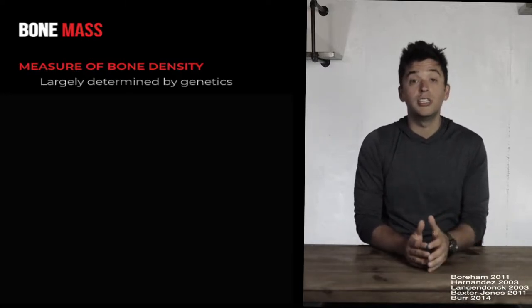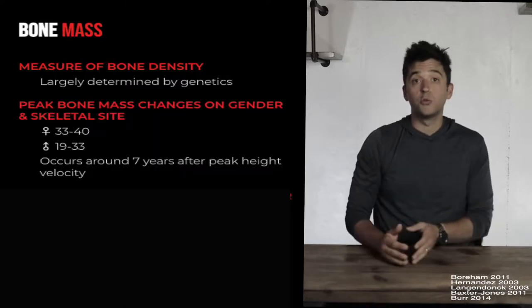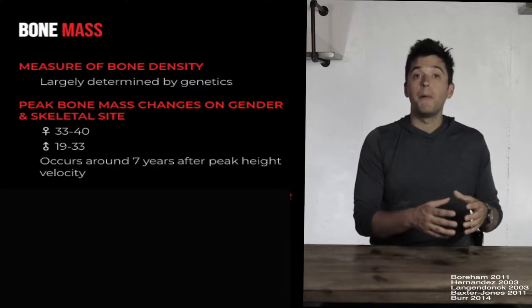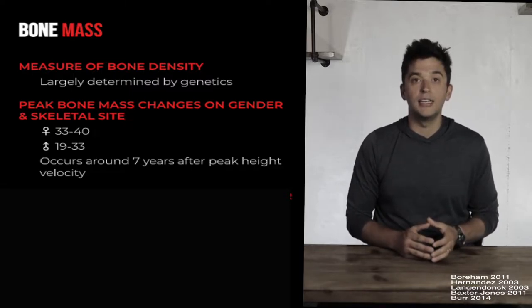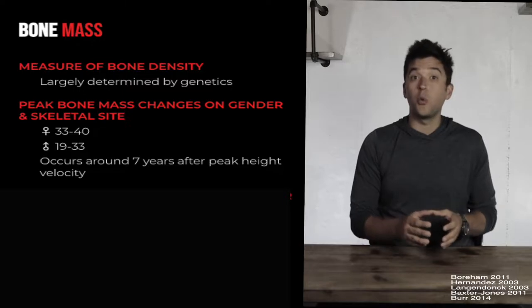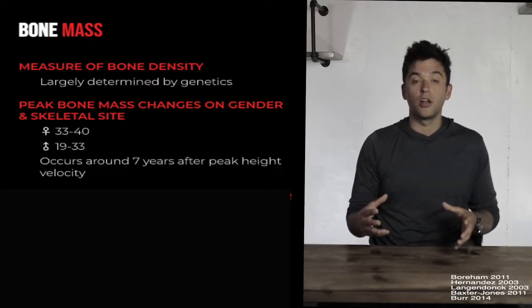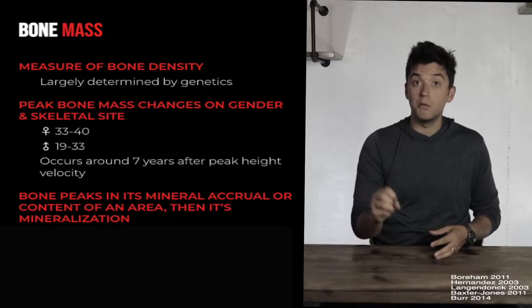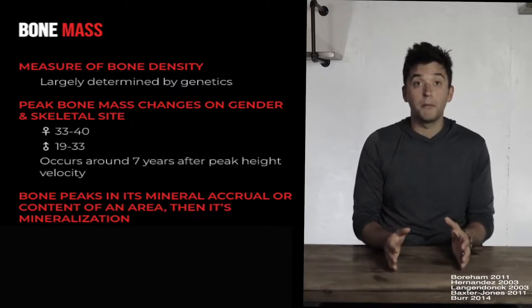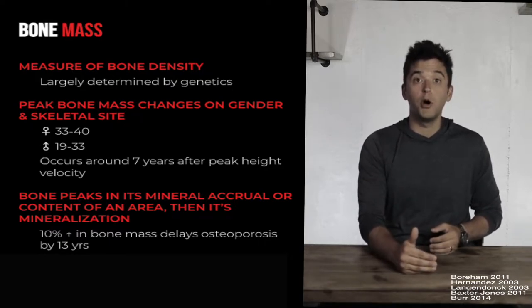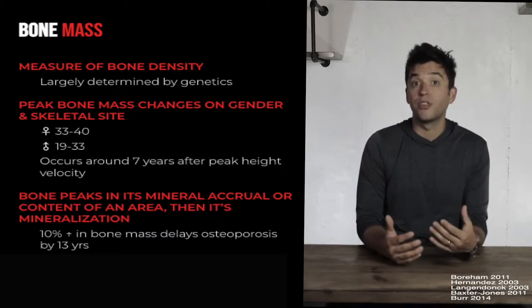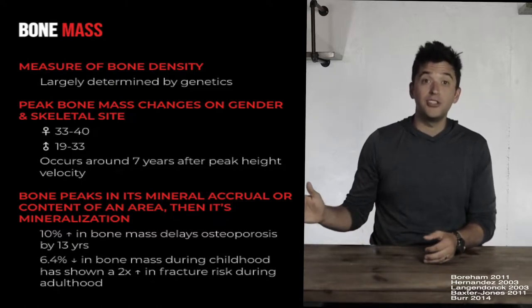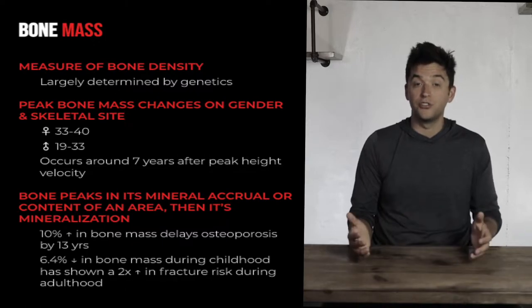Bone mass is a measure of bone density largely determined by genetics, and it changes across the lifespan. Bones are strongest about seven years after the big growth spurt — typically in our 20s to late 30s — peaking in bone content and then in mineralization. A 10% increase in bone mass can delay the onset of osteoporosis by 13 years, while a 6.4% decrease during childhood can double the risk of fracture as an adult.